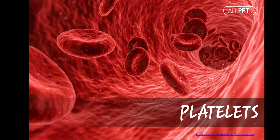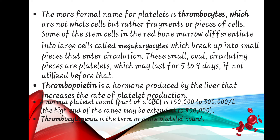Platelets, more formally called thrombocytes, are not full cells but rather fragments or pieces of cells. Some stem cells in the red bone marrow differentiate into large cells called megakaryocytes, which break into small pieces that enter circulation. Thrombopoietin is a hormone produced by the liver that increases the rate of platelet production. A normal platelet count from a CBC is 150,000 to 300,000 per microliter, with the high end possibly extending to 500,000. Thrombocytopenia is the term for a low platelet count.